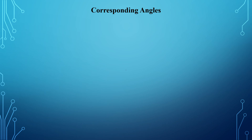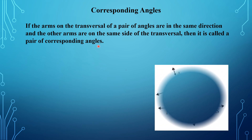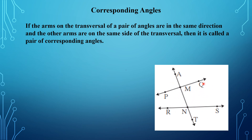Let us study corresponding angles. What is a corresponding angle? The definition: if the arms on the transversal of a pair of angles are in the same direction, and the other arms are on the same side of the transversal, then it is called a pair of corresponding angles. In this figure, line PQ and line RS are the two given lines and line AB is the transversal.